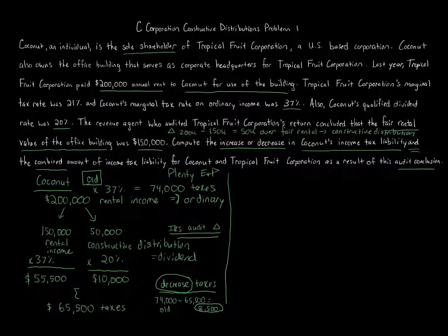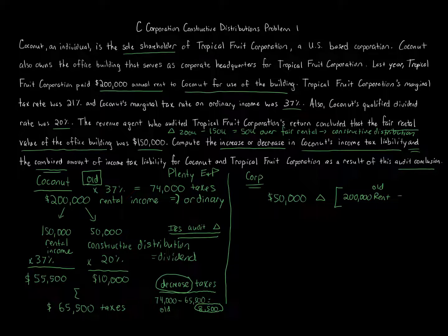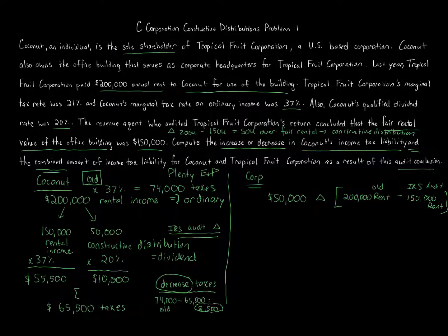Now we have to consider the combined effect. When we go from $200,000 of rental income to $150,000 rental income and $50,000 constructive distribution, the corporation is going to have to pay more in taxes because it doesn't get the full deduction. That $50,000 change — the $200,000 of rent under the old approach minus the IRS-audited $150,000 in rent — results in a $50,000 change that the corporation cannot deduct.